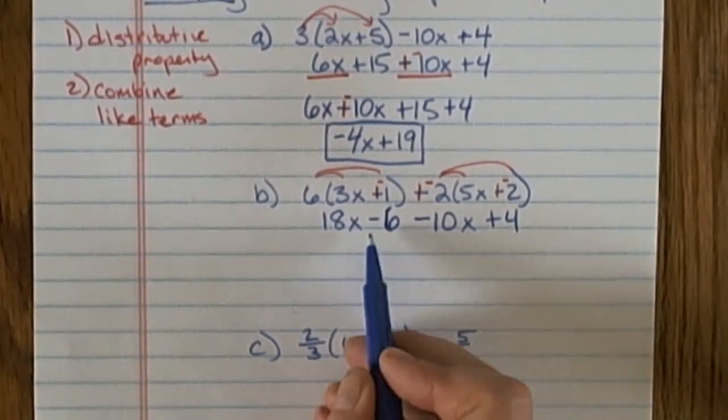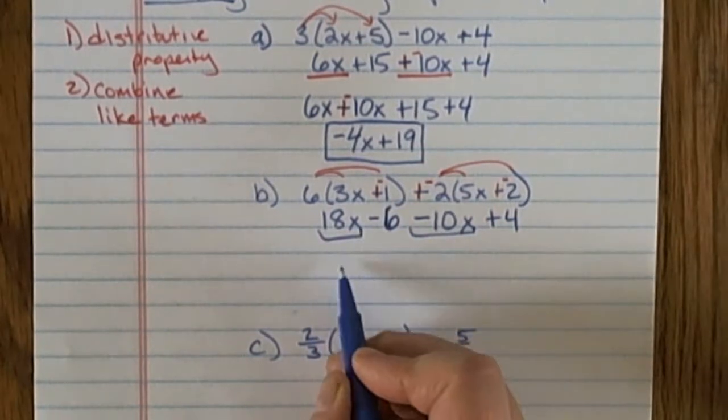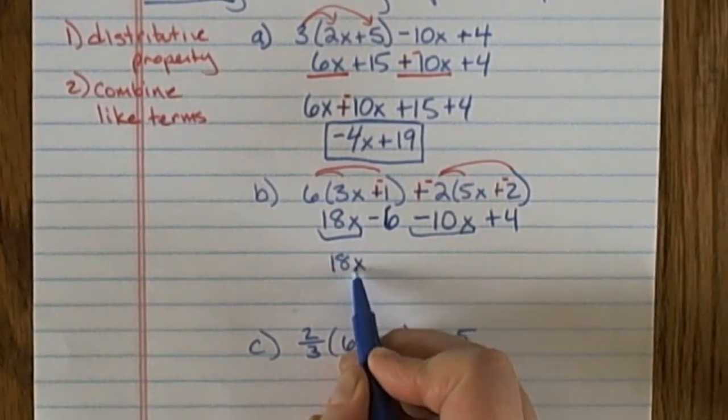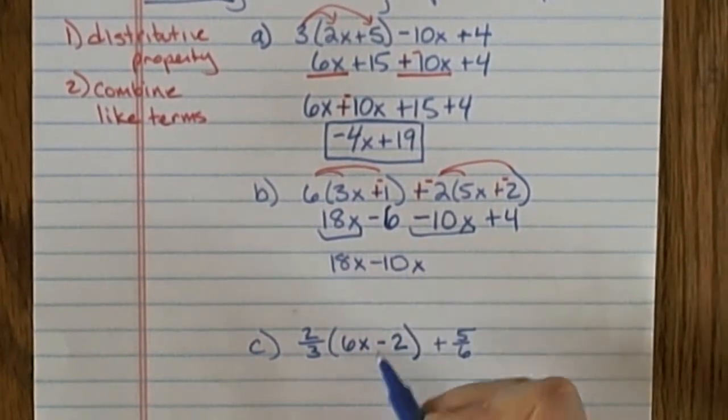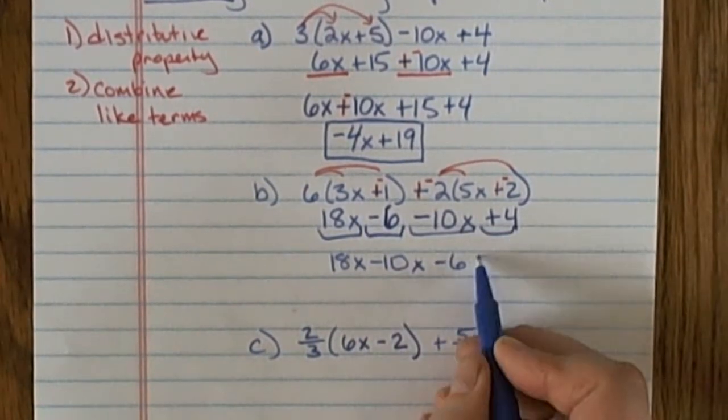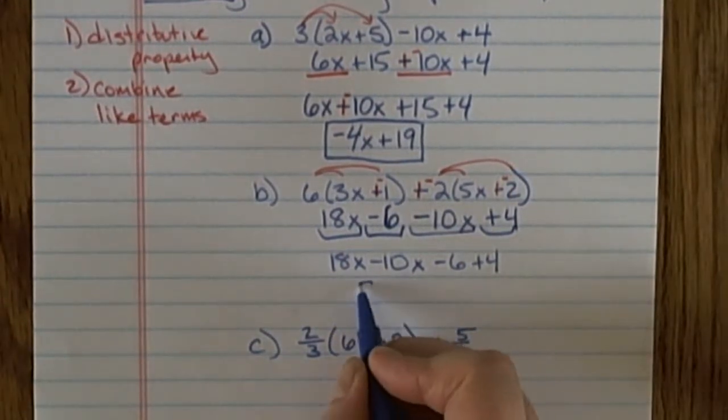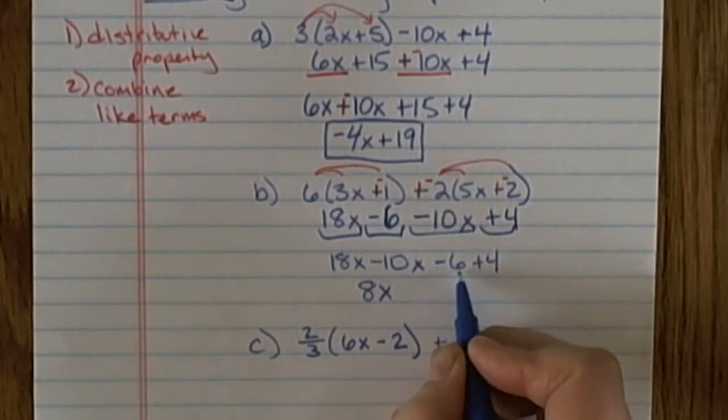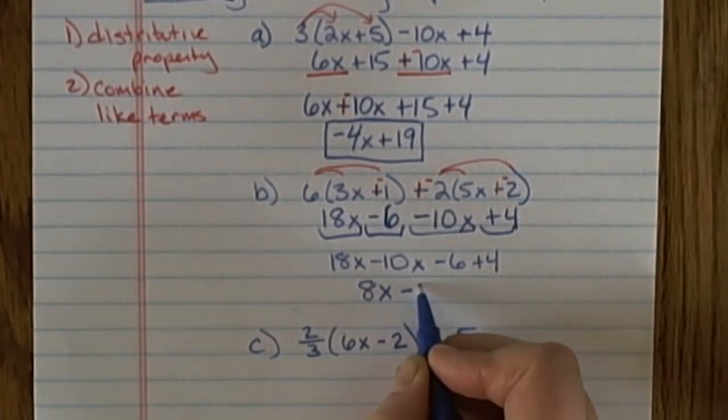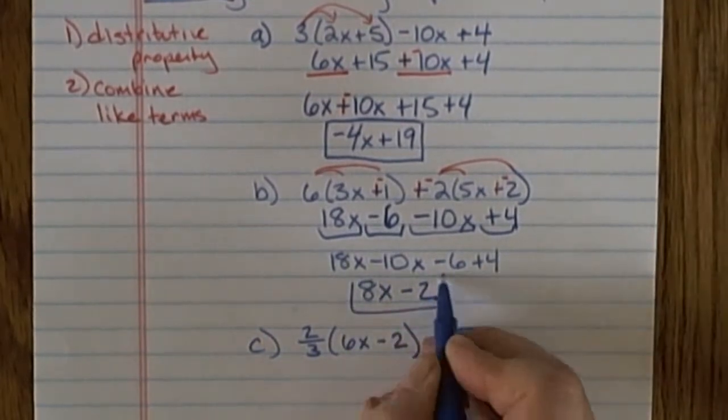I'm going to have 18x, and I'm bringing the negative 10x with that because they're like terms. So I have 18x minus 10x. Then I have minus 6 plus 4. Now I'll combine like terms. 18 minus 10 is positive 8x, and negative 6 plus 4 is minus 2. That's my final answer.